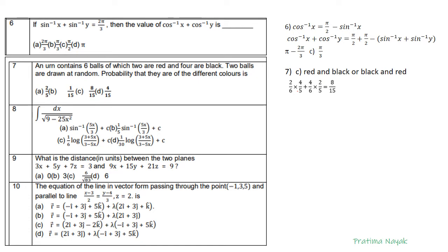Now an integration question: integrate dx divided by √(9 − 25x²). This is a direct formula-based question, but people often make mistakes by leaving out 1/5 or writing incorrectly. Rewrite as dx / √(3² − (5x)²). The answer is (1/5) sin⁻¹(5x/3) + C. So the answer is B.